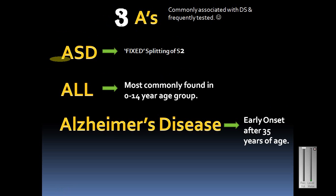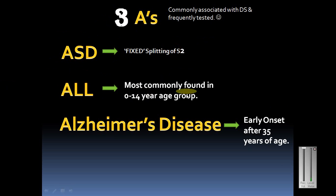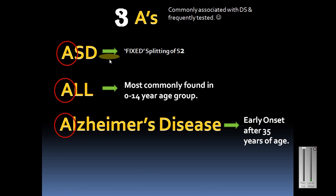The first A is ASD — atrial septal defect — which causes fixed splitting of S2, something you may find in some vignettes. The second A is ALL — acute lymphocytic leukemia — most commonly found in the 0 to 14 years age group. The third A is Alzheimer's, which in Down syndrome cases has an early onset, usually by age 35.